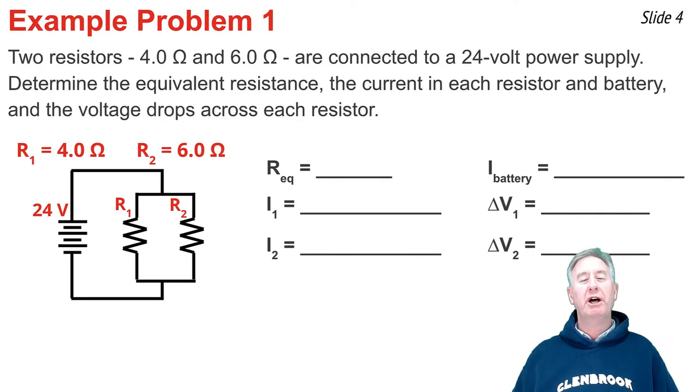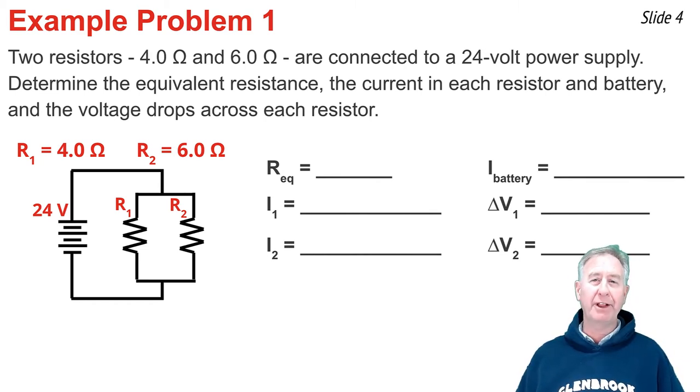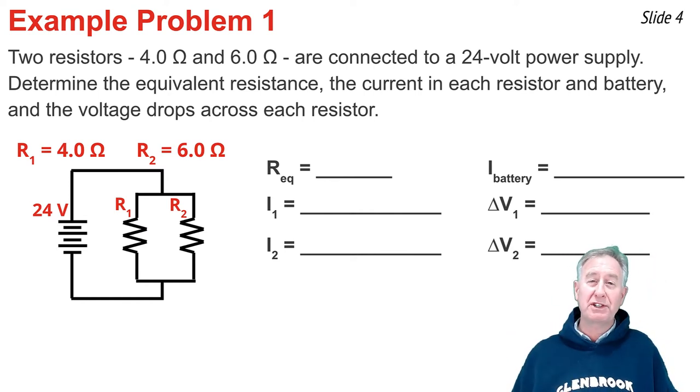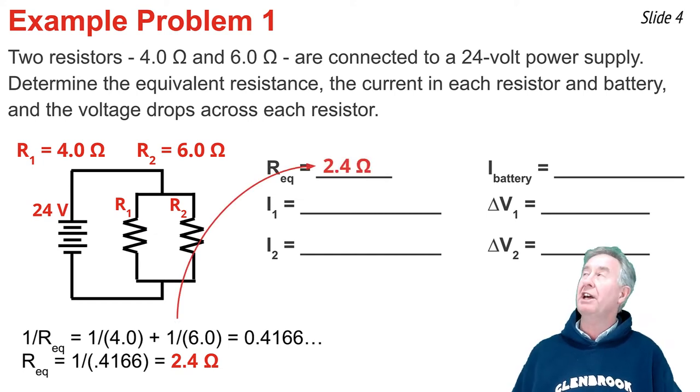In my first example problem, I have two resistors, a 4 ohm and a 6 ohm resistor, connected to a 24-volt battery in parallel. I want to determine all of this. I'm going to begin with the equivalent resistance. So 1 over REQ is equal to 1 over 4 plus 1 over 6. I evaluate the right side. It comes out to be 0.4166 repeating. Then I say the equivalent resistance is 1 divided by 0.4166. It comes out to be 2.4 ohms.